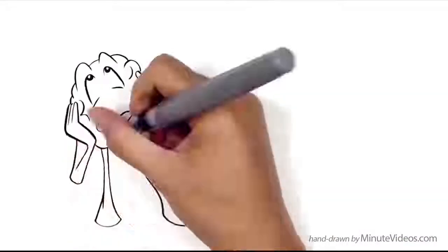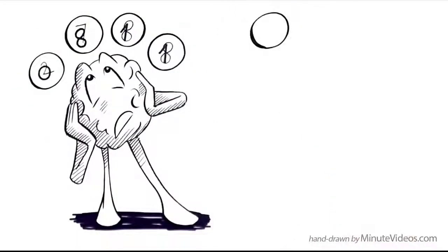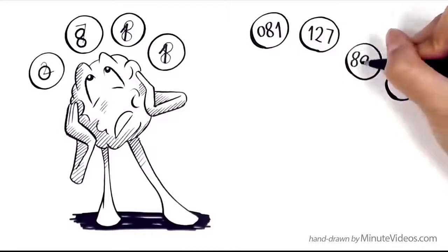This is why it's almost impossible to recall nine digits like 081127882. There is simply not enough space. Once chunked, there is.